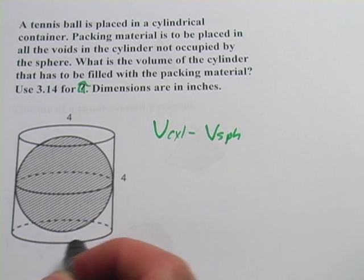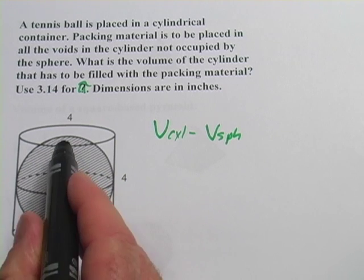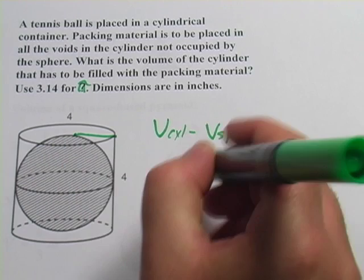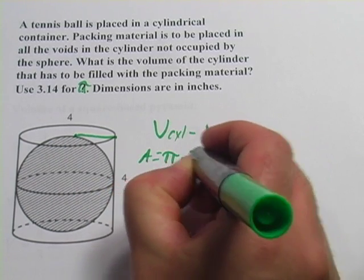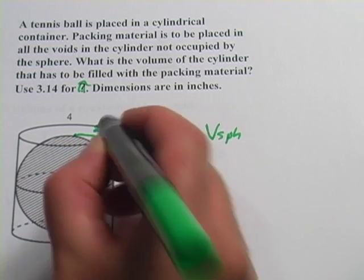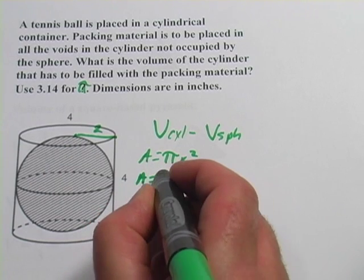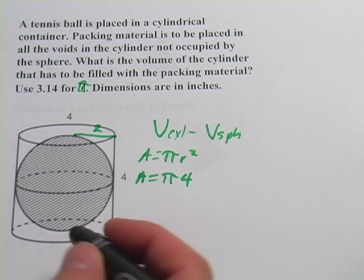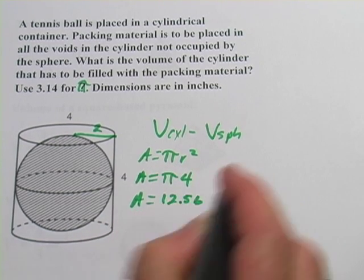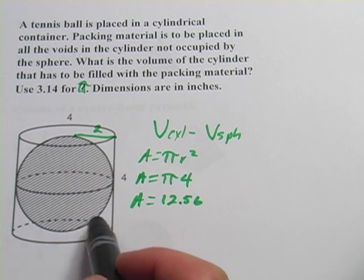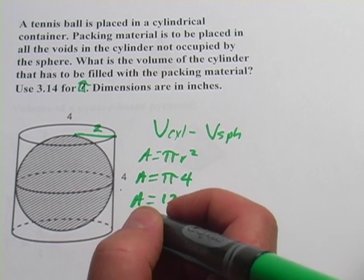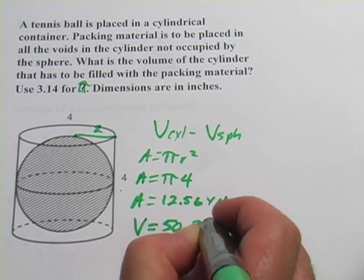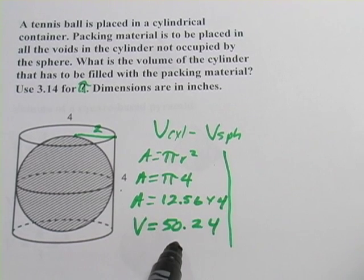The volume of a cylinder is the area of the circle times the height. The circle shown has a diameter of 4, so its radius is 2. The area of the circle is pi r squared: 2 times 2 is 4, so that's 4 pi. Using 3.14 times 4 gives 12.56 — that's the area of the circle. To get the volume of the cylinder, multiply by the height of 4: 12.56 times 4 gives 50.24. That is the volume of the cylinder.